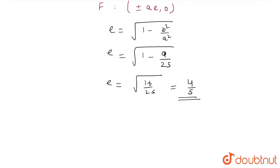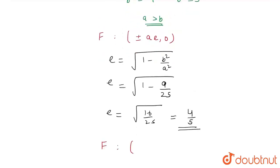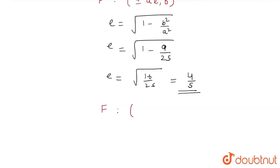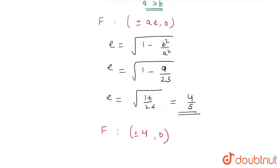Therefore, the coordinates of the foci = (±ae, 0), where a = 5 and e = 4/5, so ae = 4. Therefore, the coordinates of the foci are (±4, 0).